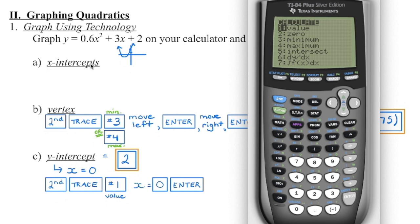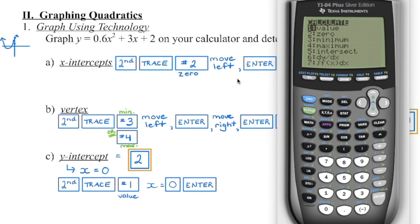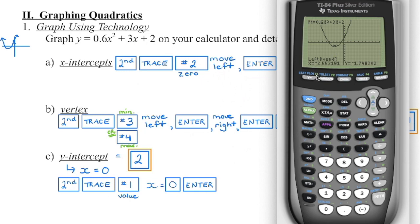Zeros are another way of saying the x-intercepts. We're going to begin the same way — please grab your calculator and try this to make sure you're able to get the correct values. I've already gone second function trace, and we're going to choose number 2, zero. You can see where the cursor currently is — I can see that I crossed the x-axis two times, so this particular parabola has two x-intercepts. I'm going to begin with the one on the left. Again, imagine there is a vertical line passing through that intercept — my cursor needs to be on the left-hand side of it, so I'll hold this down until I'm on the left, close but on the left, and then press enter.